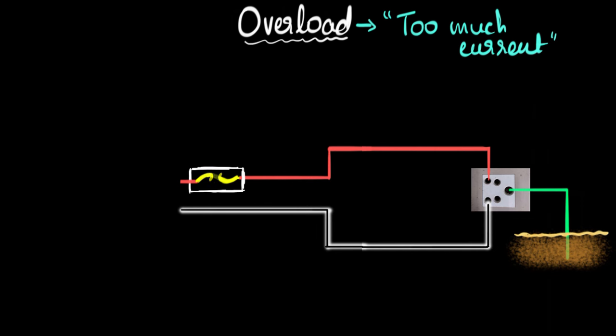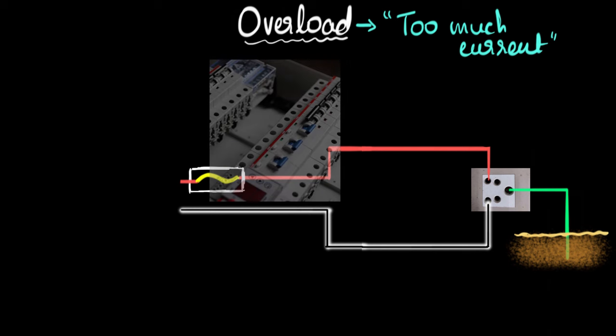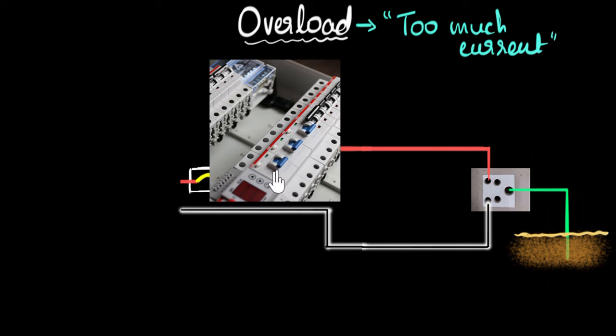All right, so that's basically how overload protection works in the most basic terms. And of course, today we also have something called circuit breakers, which is a little advanced version of the fuse. You see, the fuse, once the wire melts, you'll have to change the fuse wire, right? But with circuit breakers, automatically it breaks the circuit as a switch. It works on a similar principle, but a little advanced.